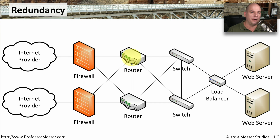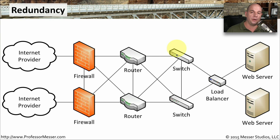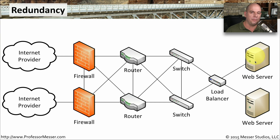Inside of the network are usually multiple routers as well, performing the same type of failover process — if one happens to fail, everything will route through the other device. You can also have multiple switches sharing and transferring the load between them, and load balancers that redirect traffic to multiple web servers. That way, if you lose a power supply or the operating system fails on one web server, the other one remains up and running.